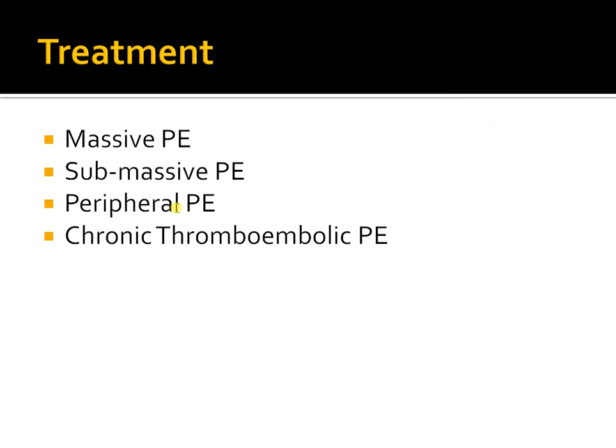The third type is peripheral PE — the most common — where you diagnose it on a CT scan, the patient is doing fine, maybe with some symptoms or sometimes no symptoms at all. The last entity is chronic thromboembolic pulmonary embolism, which is very difficult to diagnose and an extremely rare condition. It involves pulmonary embolism in peripheral small arteries, and the only treatment for this would be surgical correction.